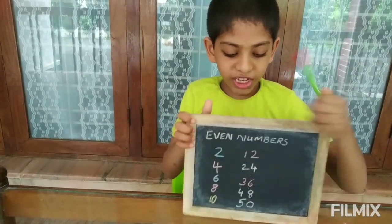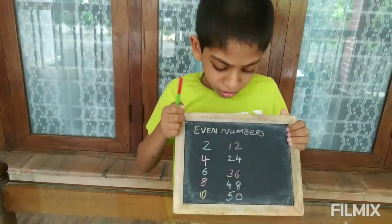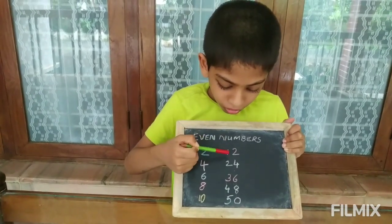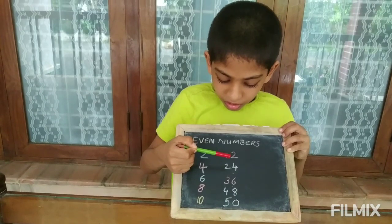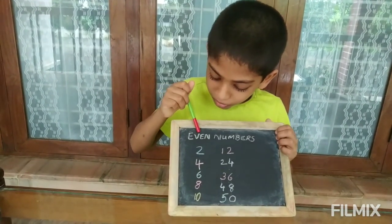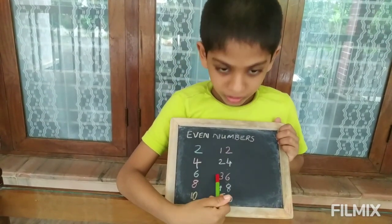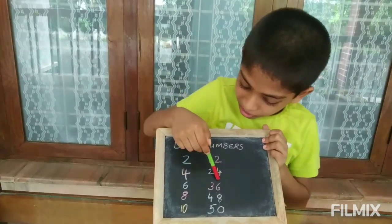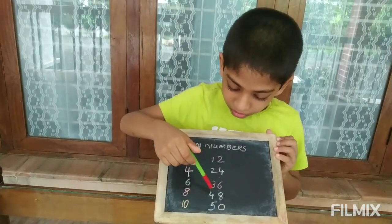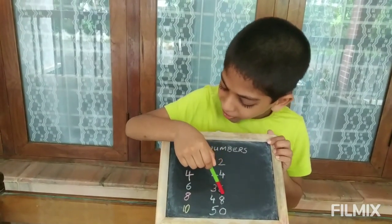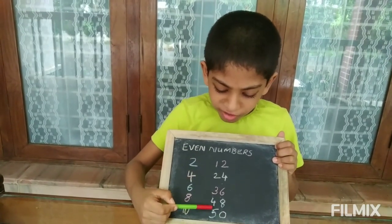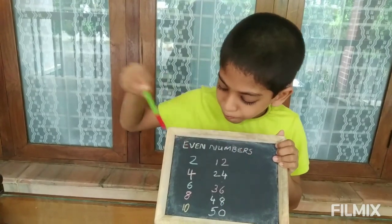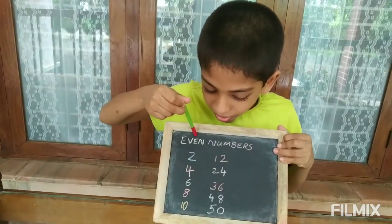Now I am showing even numbers. If two is in the one's place, it is an even number. Forty-eight — eight is in the one's place, so it is an even number. Fifty — zero is in the one's place, so it is an even number.